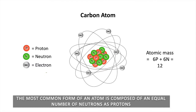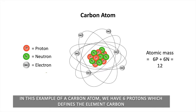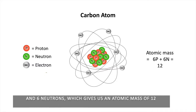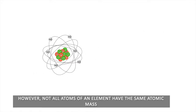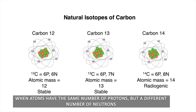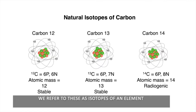The most common form of an atom is composed of an equal number of neutrons as protons. In this example of a carbon atom, we have 6 protons, which defines the element carbon, and 6 neutrons, which gives us an atomic mass of 12. However, not all atoms of an element have the same atomic mass. When atoms have the same number of protons but a different number of neutrons, we refer to these as isotopes of an element.